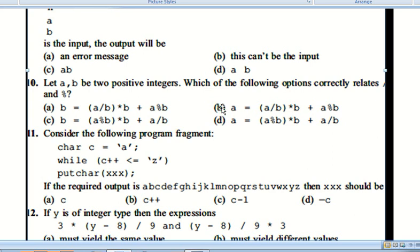Question number twelve: Consider the following program fragment - character c is declared with value 'a', while c++ <= 'z'. The character will iterate from a to z, printing them, then the compiler will reach xxx, where xxx equals x minus c. Option C is correct.